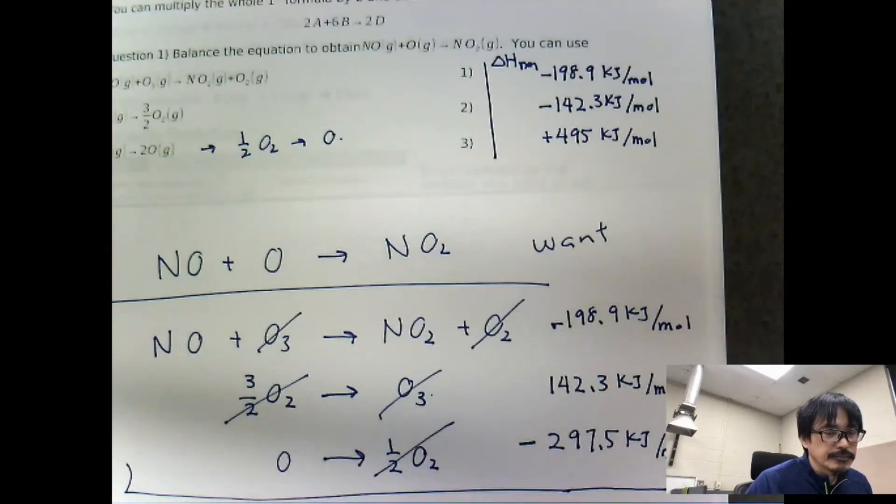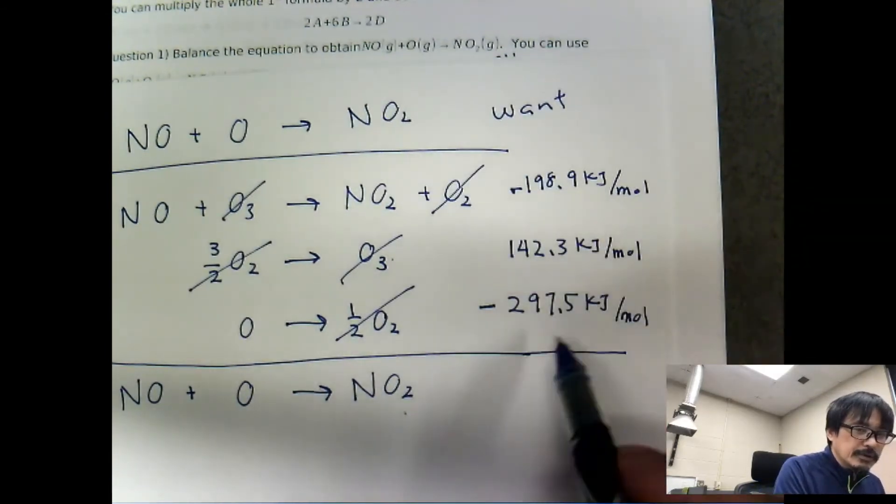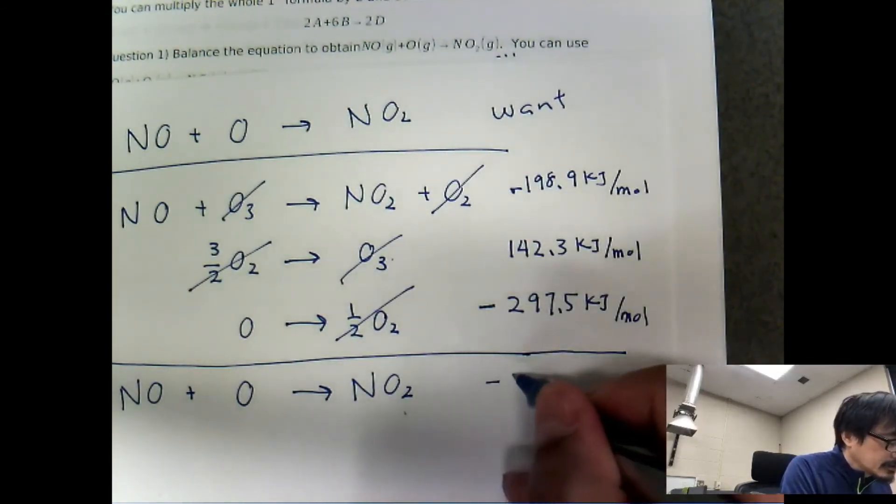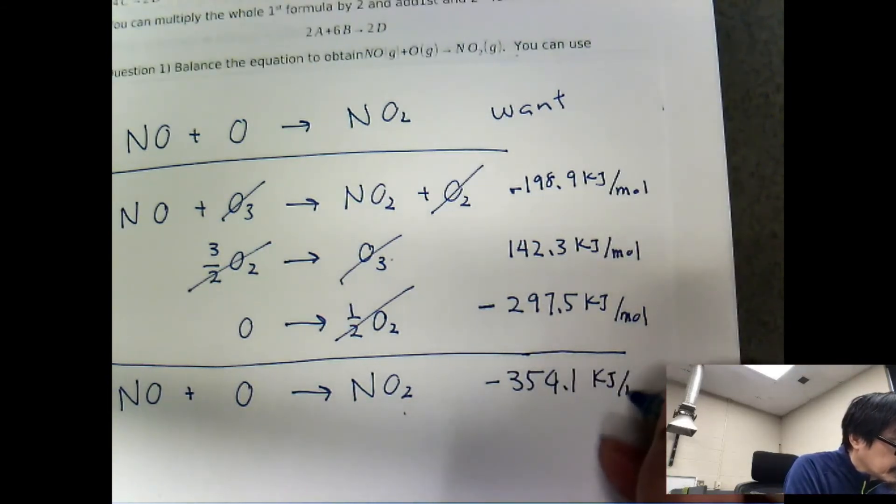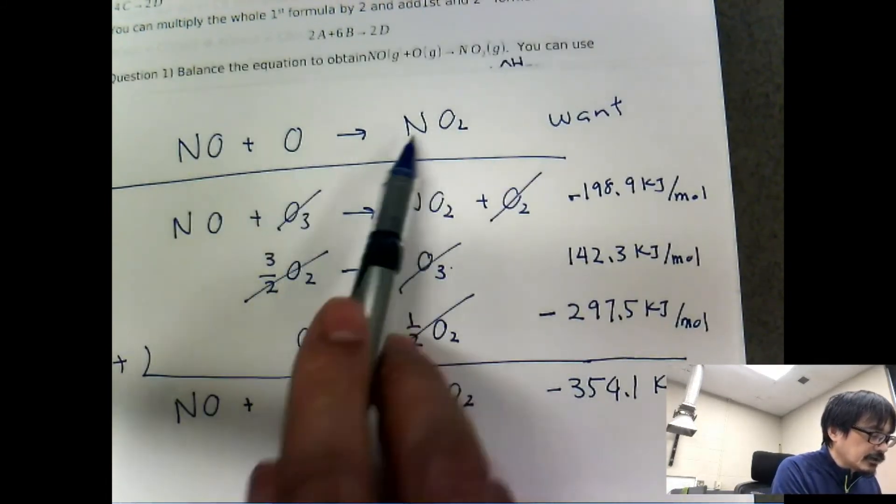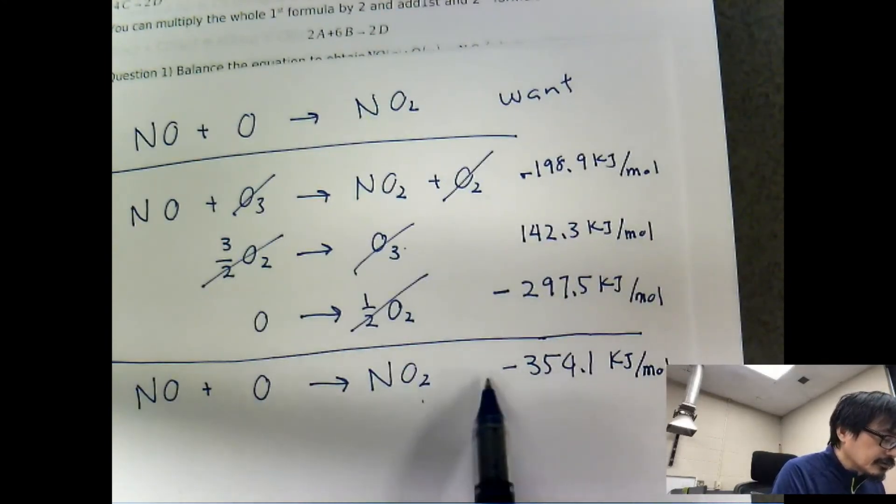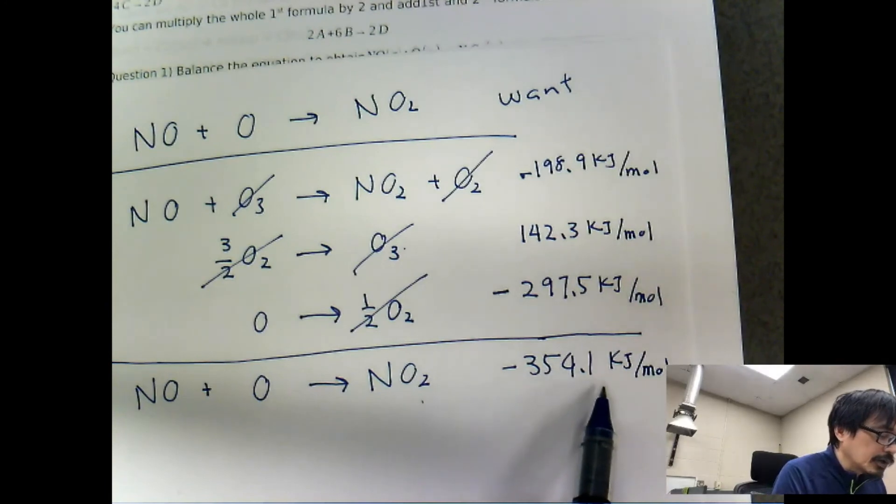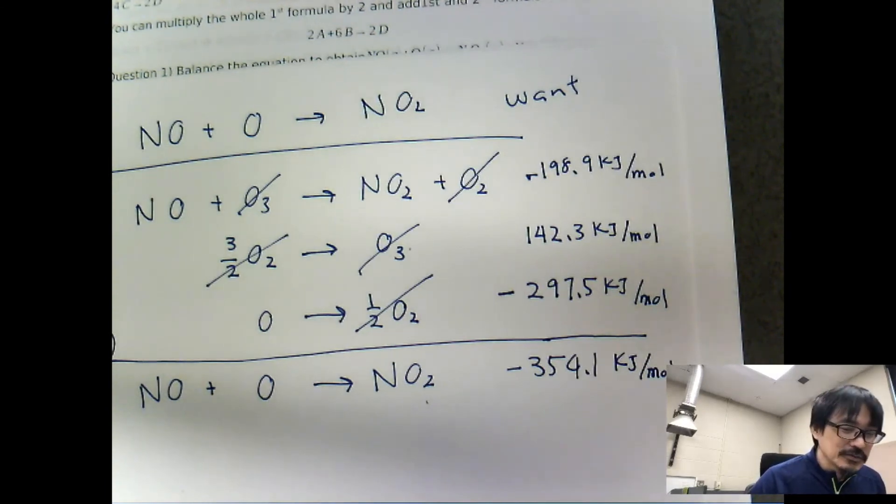So if I add up all these numbers right here, 354.1 kJ per mole. Okay, so for that reaction right here, which is identical to this guy, that reaction will have an energy of negative 354.1 kJ per mole. All right, that's the end of question number two.